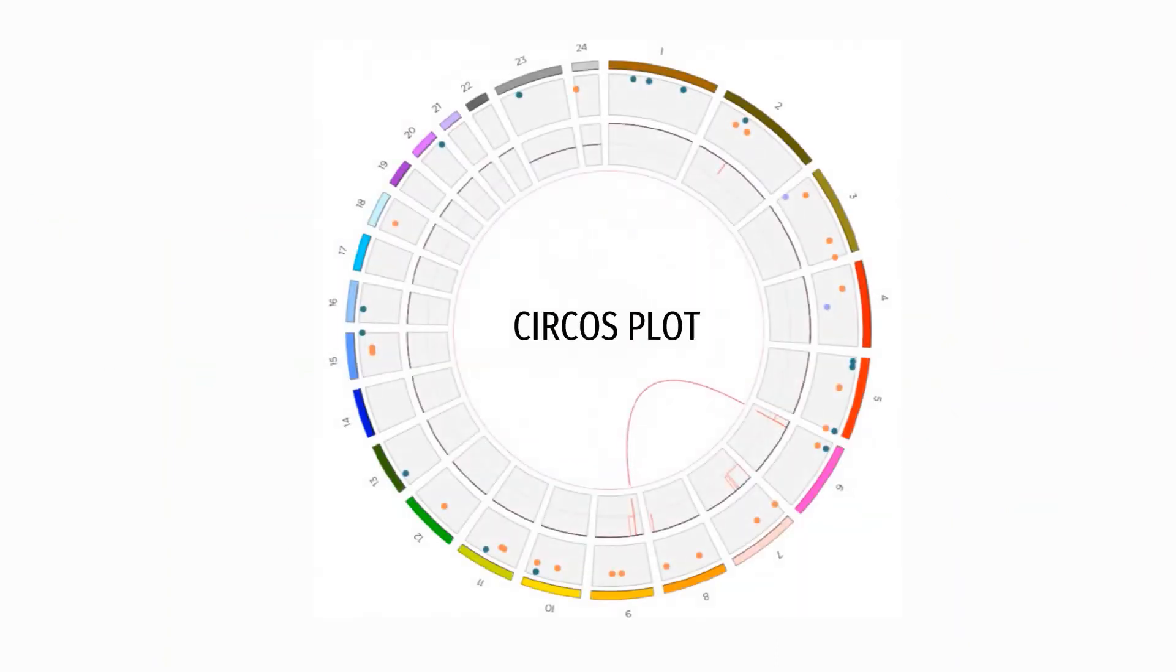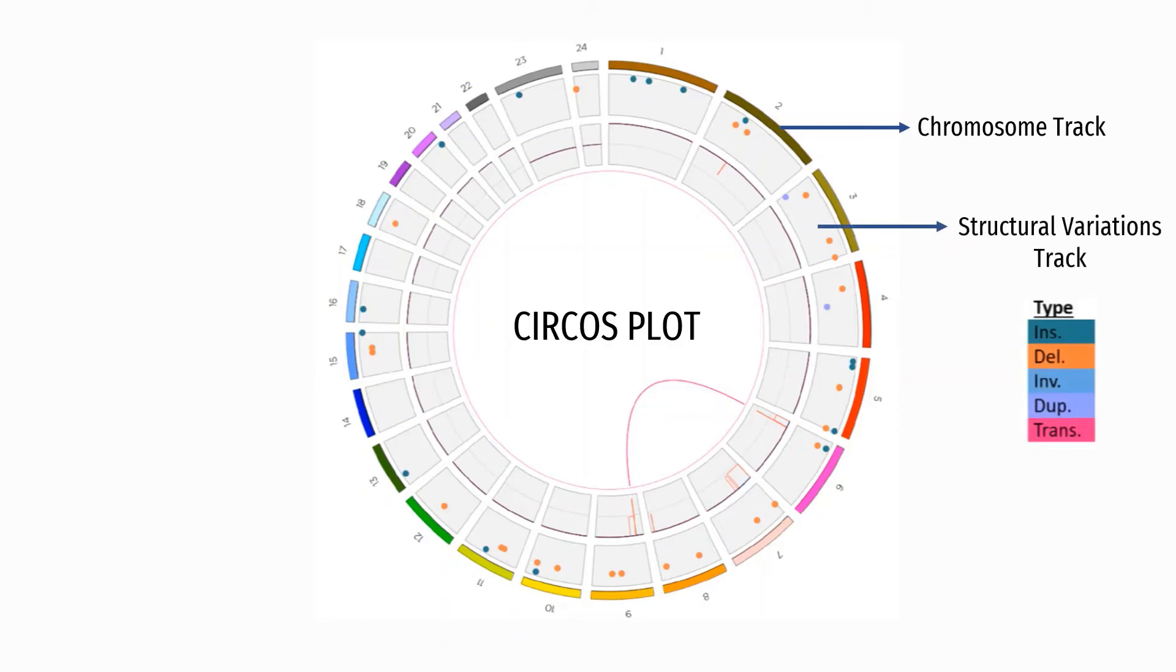The final genomic report returned by OGM is in the form of an interactive circus plot. A genome-wide circus plot is a circular plot of all 24 chromosomes: 22 autosomes and X and Y chromosomes. The outermost band of the plot represents each individual chromosome, and different colored dots in the boxes underneath represent different structural variations.